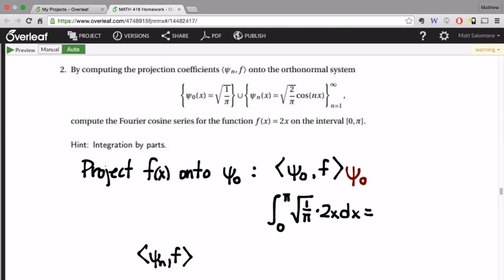Psi n with f then multiplied by psi n. You said for the integral itself, we end up with the integral from 0 to pi of f of x, which is 2x, cosine of nx dx.